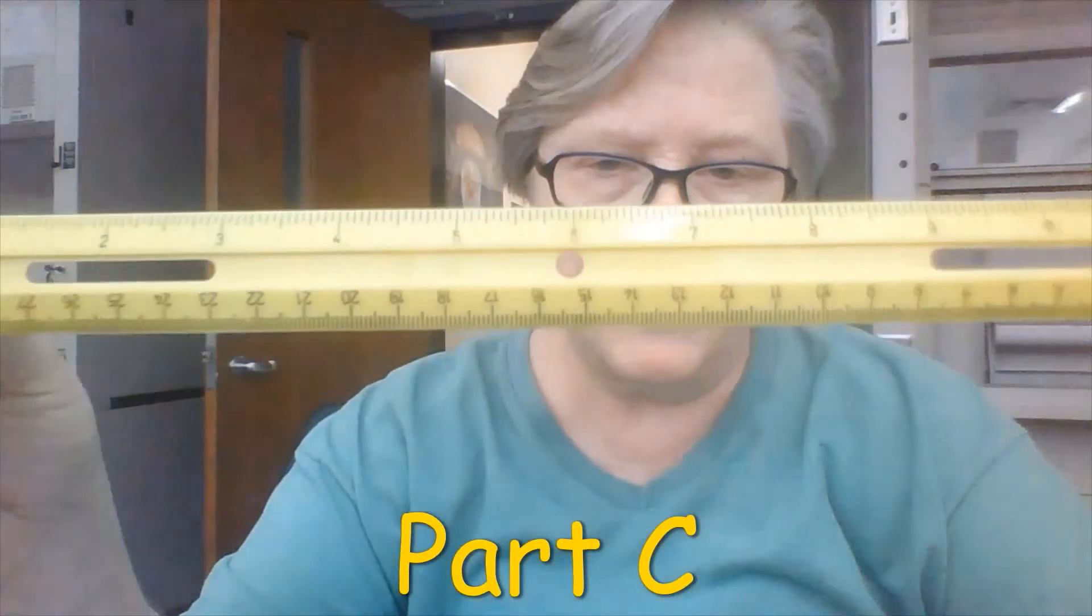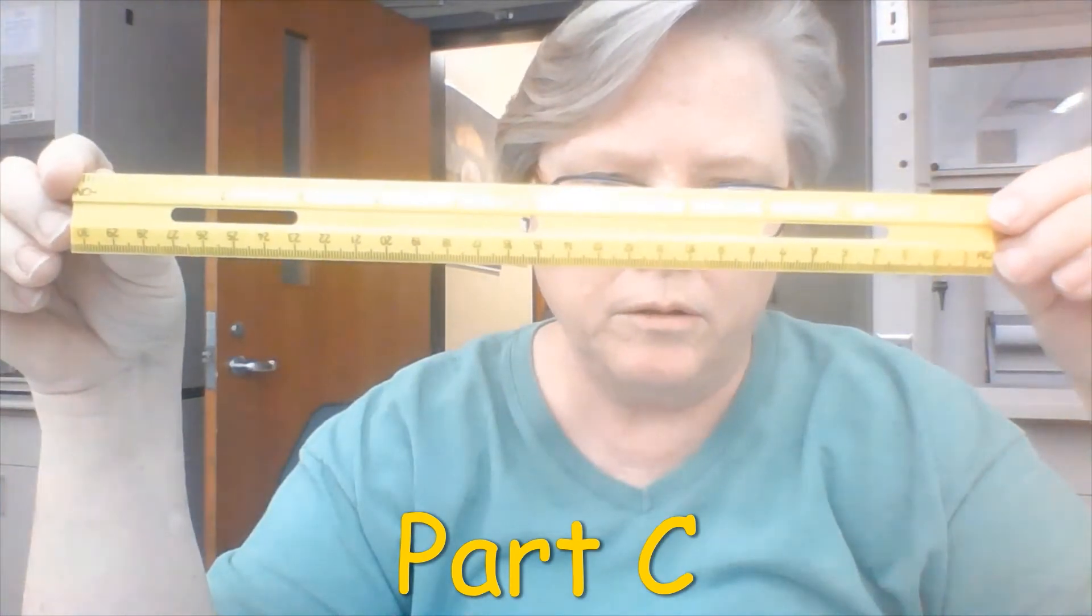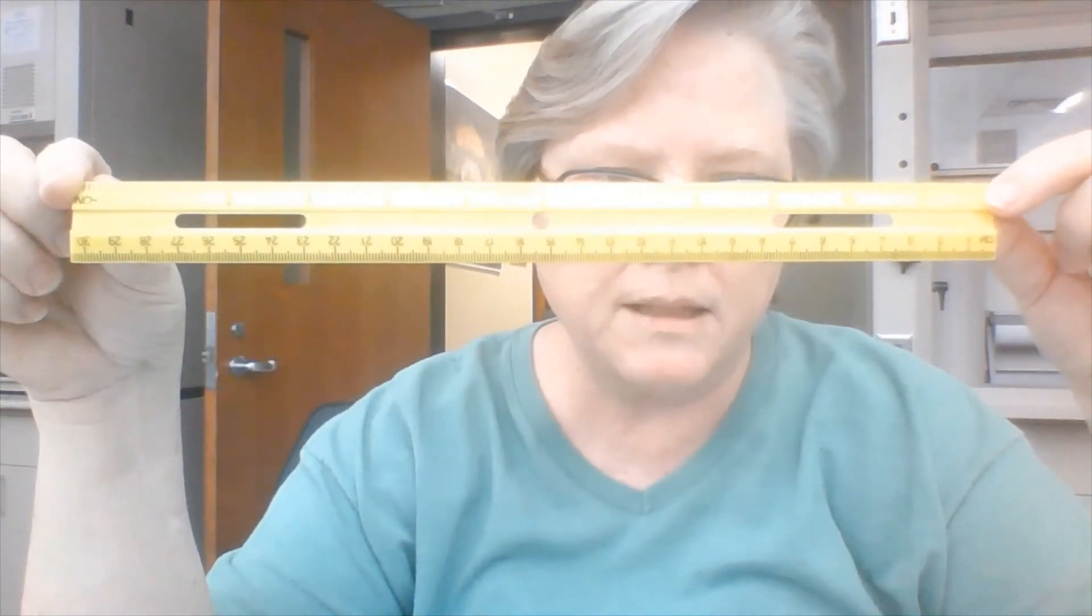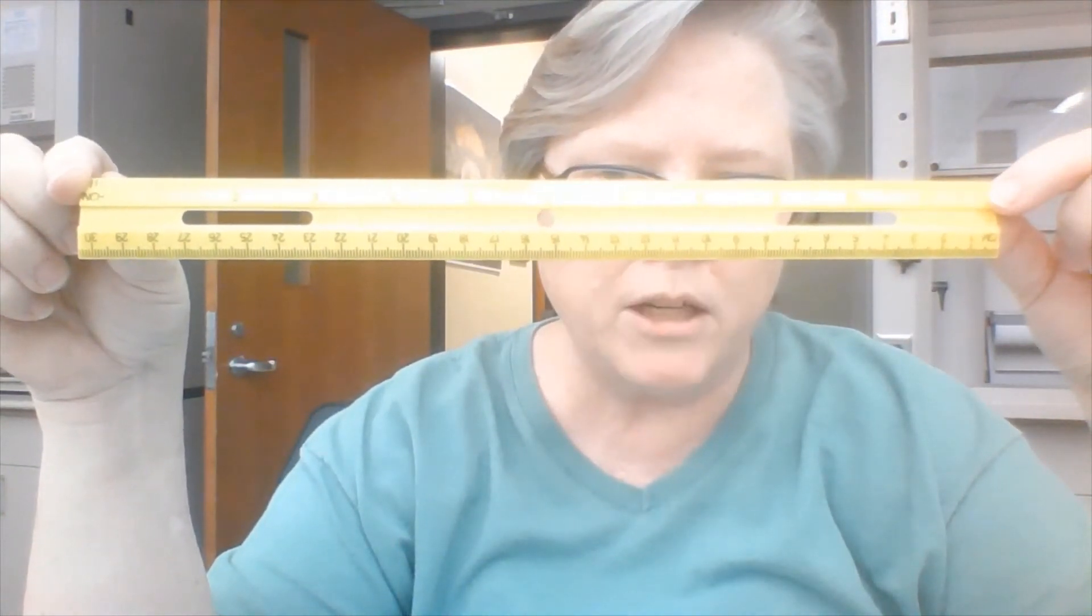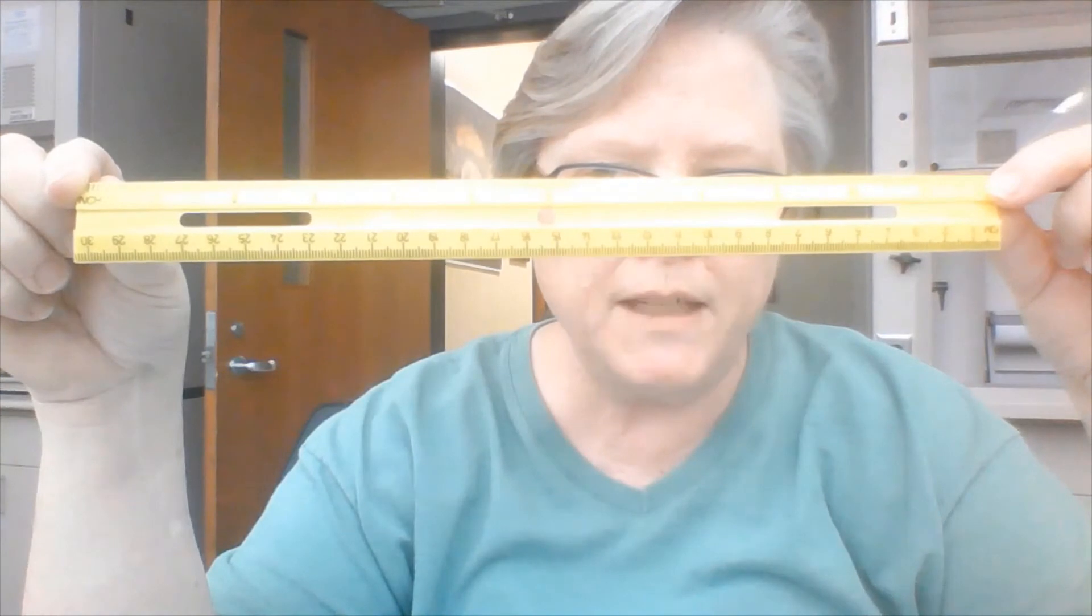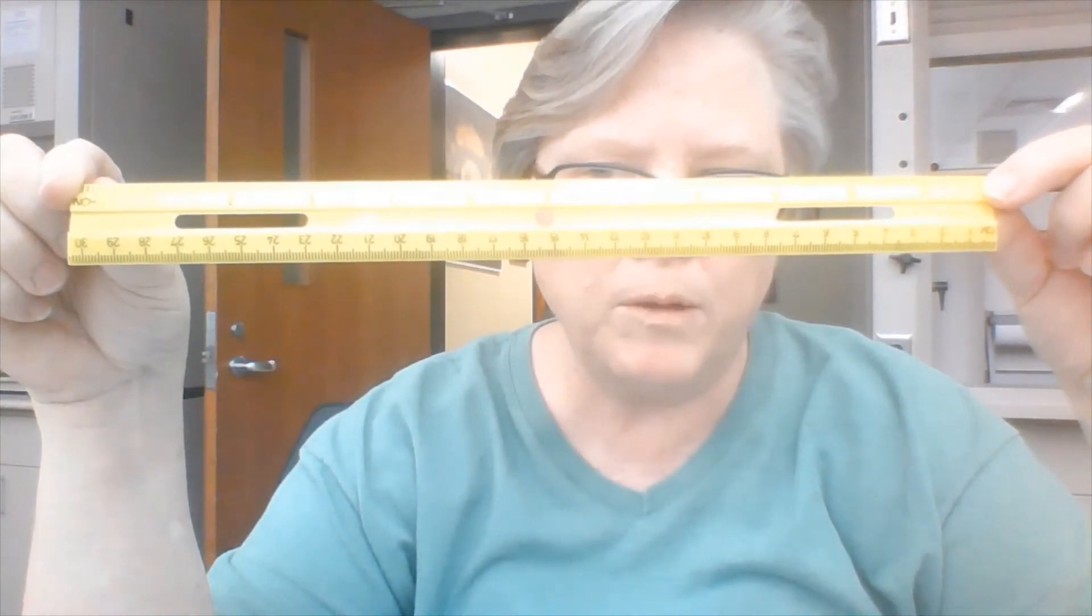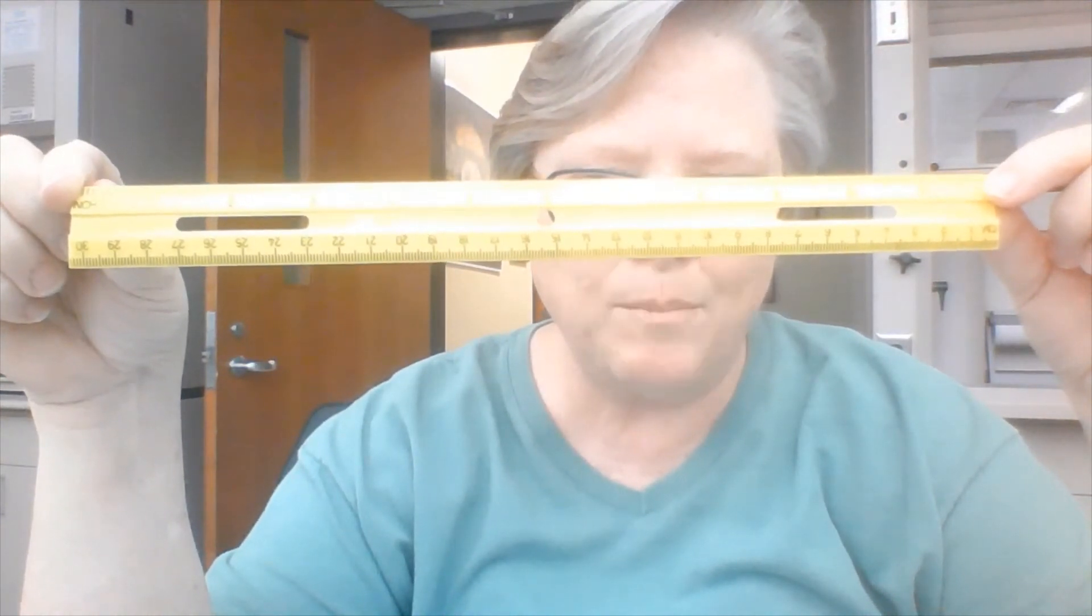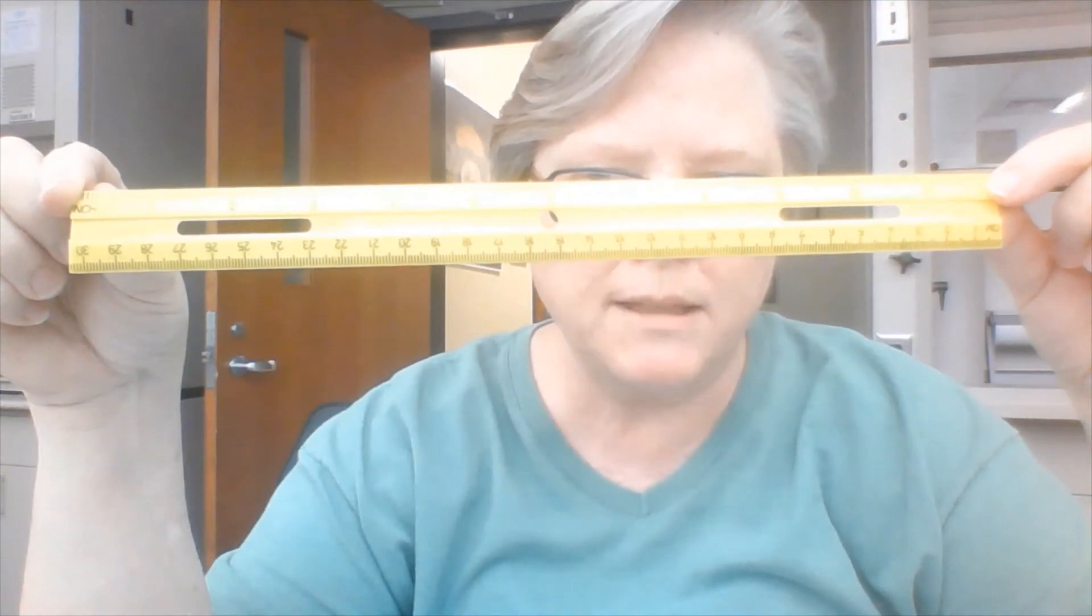Now I'm going to be using a centimeter ruler to do the next set of measurements. And notice it's marked to the tenths. It's marked to the millimeters. So I'm going to record all of these measurements to the hundredth place by estimating between the marks that are there.